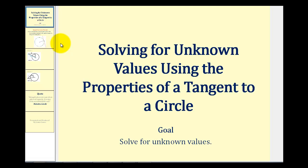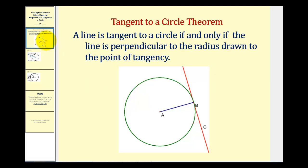Welcome to a lesson on solving for unknown values using the properties of a tangent to a circle. Let's first review that property. A line is tangent to a circle if and only if the line is perpendicular to the radius drawn to the point of tangency. So this is a tangent line where B is the point of tangency, radius AB will be perpendicular to line BC.